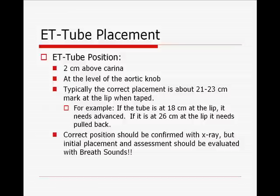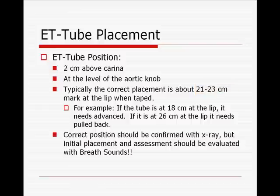ET tube placement — you should know about correct placement in terms of anatomical markers. Typically it's about two to three centimeters above the carina; that's where the tip of the endotracheal tube should be. Another anatomical marker is at the level of the aortic knob, which they like to ask on the exam. In an adult, the tube should be taped somewhere around the 21 to 23 centimeter mark at the lip. If it's at 26 or 27, that indicates it's too deep; if it's only at 16 or 17, it may not be far enough. Correct placement should be confirmed with an X-ray.